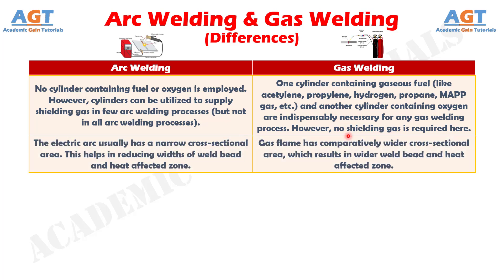Difference number 7. In arc welding, the electric arc usually has a narrow cross-sectional area. This helps in reducing the width of the weld bead and heat-affected zone, whereas in gas welding, the gas flame has a comparatively wider cross-sectional area, which results in a wider weld bead and heat-affected zone.